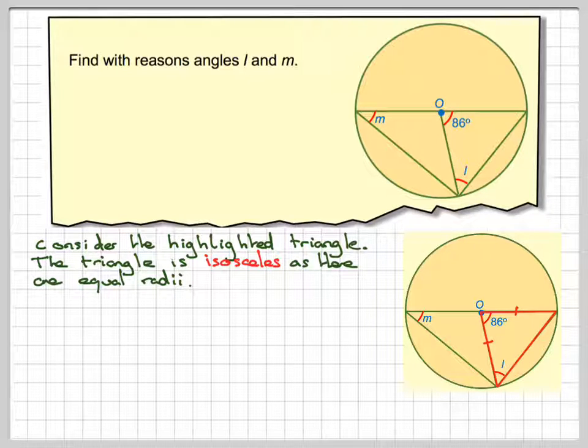So therefore this triangle is isosceles. So these two angles here are the same.